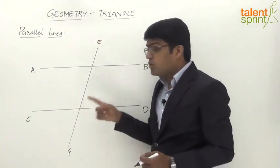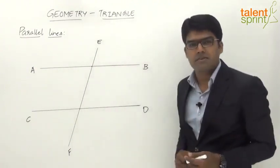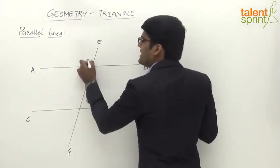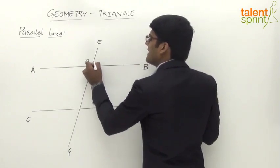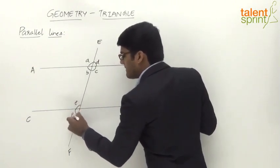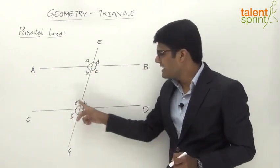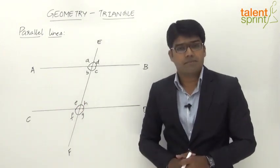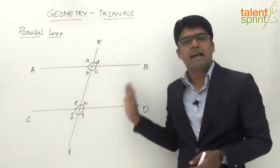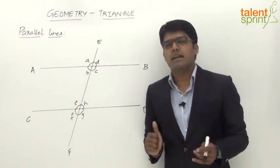At the two points of intersection, there are different angles. At the first point of intersection, we have angles A, B, C, and D. At the second point of intersection we have angles E, F, G, and H. So A, B, C, D are the four angles at the first intersection and E, F, G, H are the four angles at the second. Now there are important properties with respect to these eight angles.